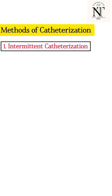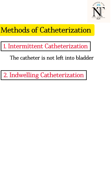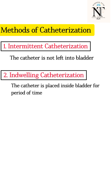The first method is intermittent catheterization. In this method, we do not leave the catheter in the bladder. The next one is the indwelling type, where the catheter is inserted into the bladder and remains in place for some period of time.